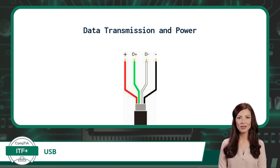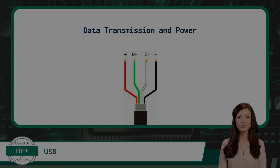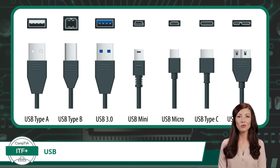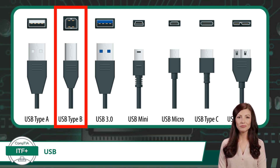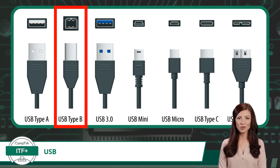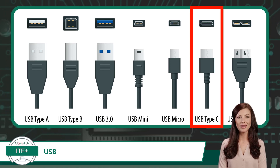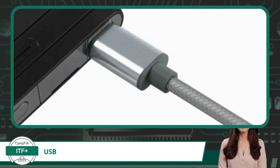With USB's main features explained, here is a quick look at the ports and connectors for the USB standard. Most of these should be recognizable, except USB Type B — this one doesn't get much love and has mostly been confined to printers. Also, USB Type C connectors are reversible, or non-keyed, meaning you can insert a USB Type C connector into its port with either side facing up.